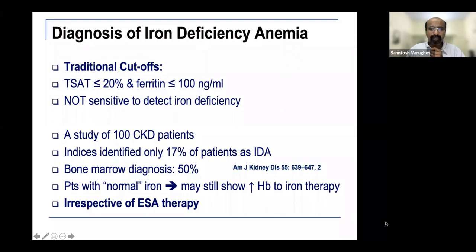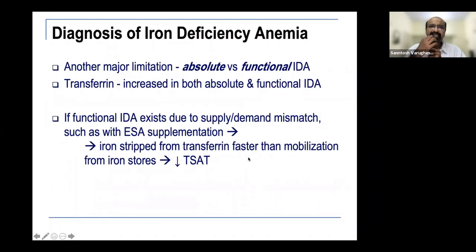Someone with normal iron levels may still have covert iron deficiency anemia and may show hemoglobin improvement with iron supplementation irrespective of erythropoietin therapy. These markers are not useful by themselves. The other major limitation is distinguishing absolute versus functional iron deficiency. With ESA supplementation, iron is stripped from transferrin faster and T-sat can actually drop — an important factor to consider.